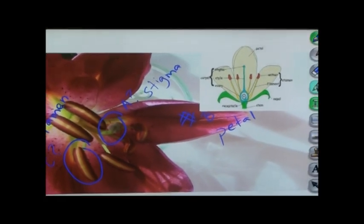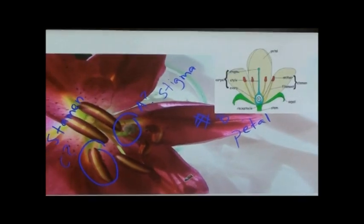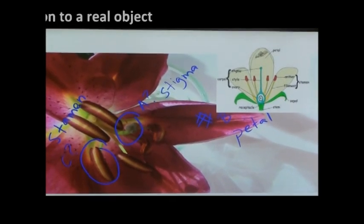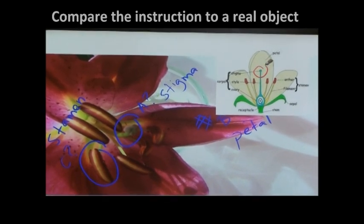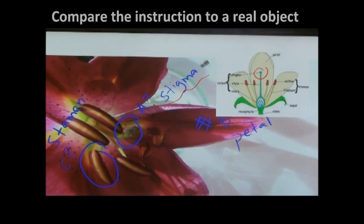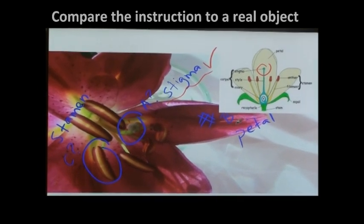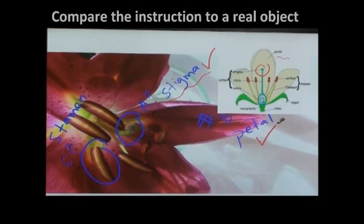So I can change my pen's color to the red one, and we can correct together with the students. So A is stigma, so stigma is this part, so stigma is correct. B is petal, where is the petal? Petal is here, so petal is correct.